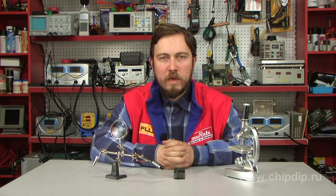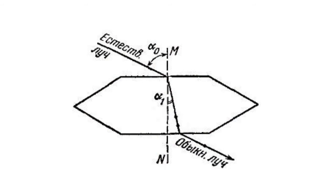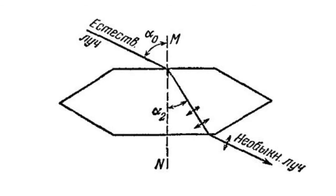The two parts of the ray formed within the crystal have different properties. One part follows the common laws of light refraction within non-crystals and is called the ordinary ray. The other part of the double ray has its outlet lying within a plane making a definite angle with the plane of the ray.